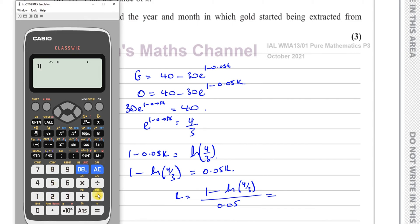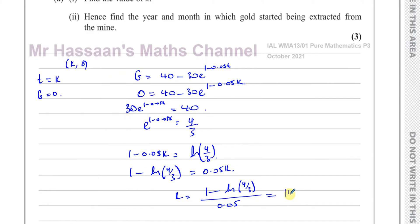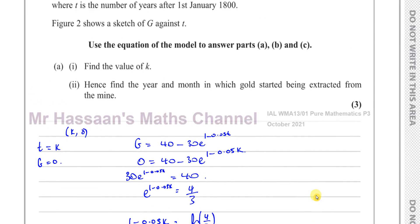So I have here 1 minus the ln of 4 over 3, and all of this is divided by 0.05. And that gives me 14.2463. That's 14.2. And k is in years, so it's years. All right, so that's the value of k, 14.2.